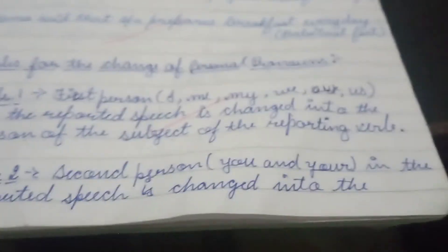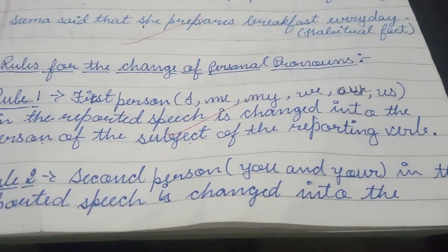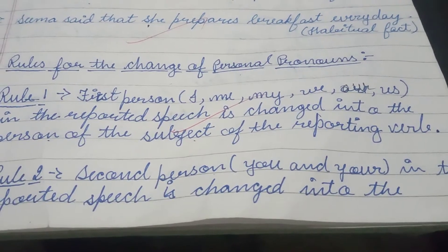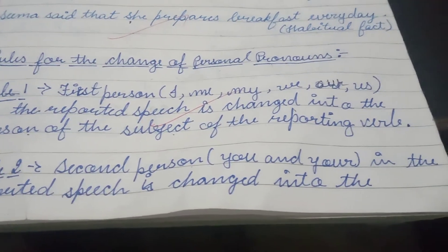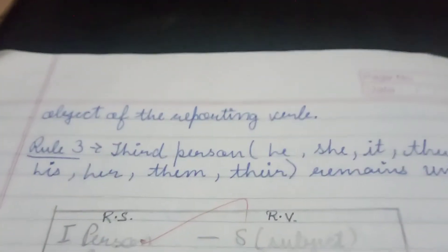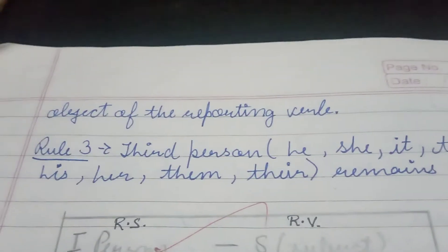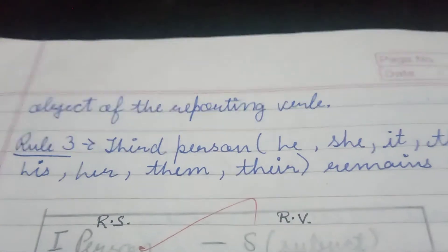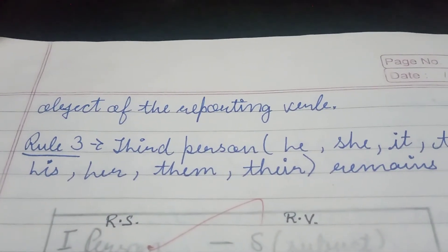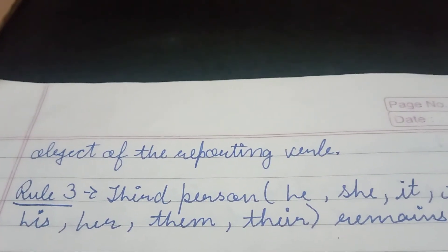Rule 2 says about the second person, and rule 3 is about the third person. We have three persons, and corresponding to those we have three rules for the change of personal pronouns. Rule 2 says: second person — which is 'you' and 'your' — in the reported speech is changed into the person of the object of the reporting verb. This means if in the reported speech we have 'you' or 'your', then we will go to the reporting verb, we will see which one is the object, and we will see the person of that object, and into that person 'you' and 'your' will be changed.